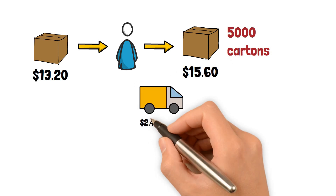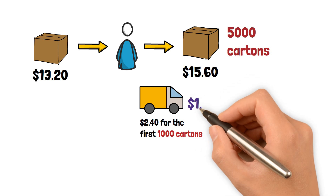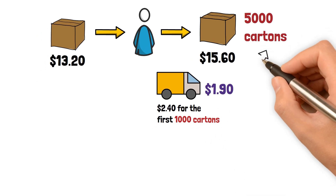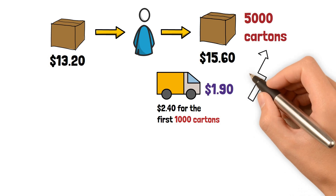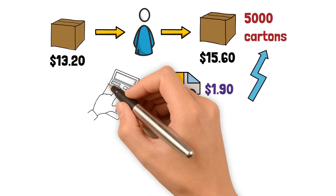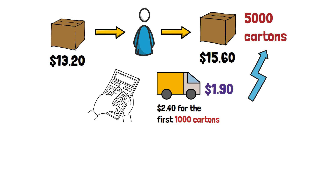Shipping costs $2.40 for the first 1,000 cartons and $1.90 for every carton over that. This opportunity increases the value of the wholesale food retailer because the costs are less than the benefits. To determine whether taking this opportunity will increase the value of the wholesaler, we need to calculate the costs and benefits.